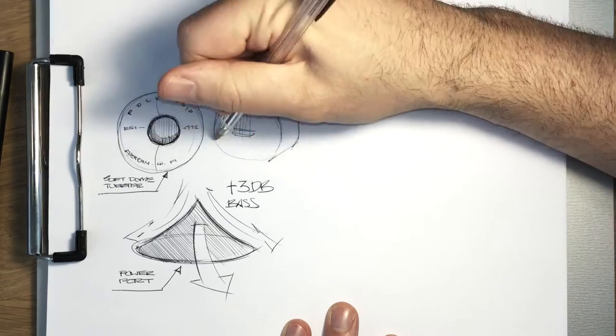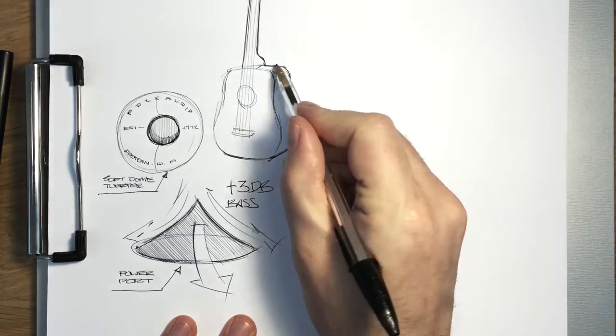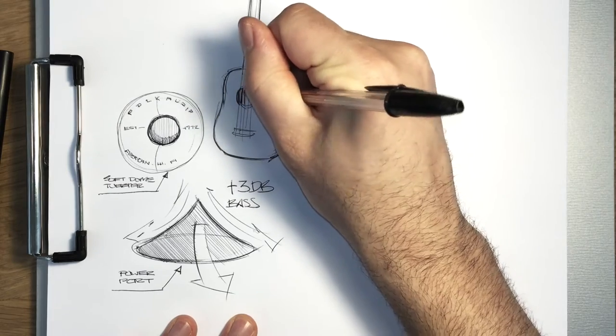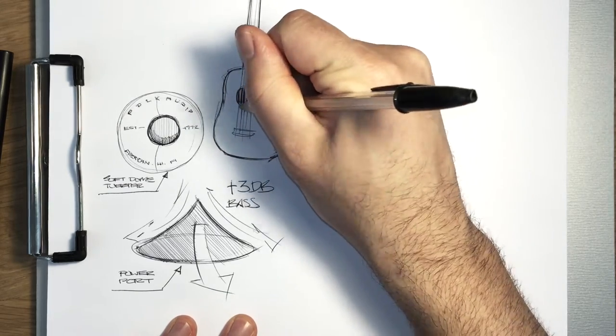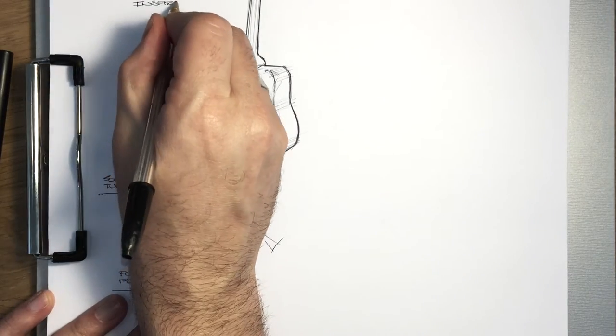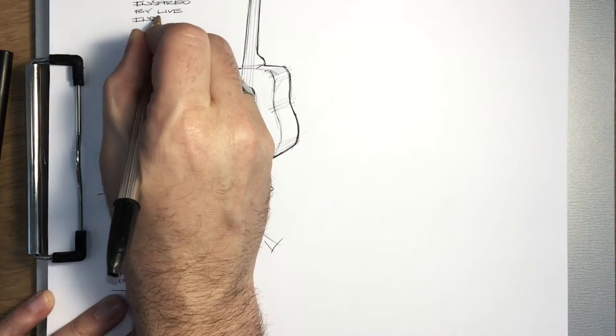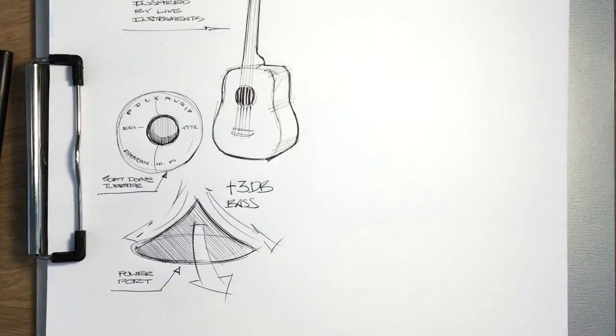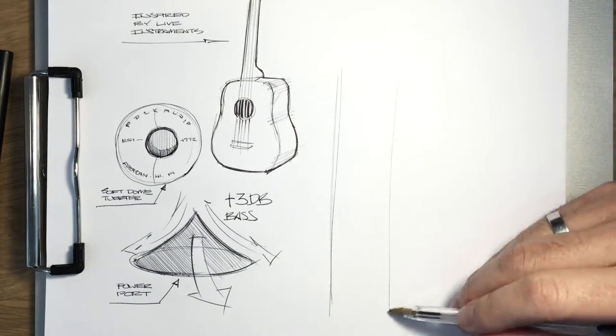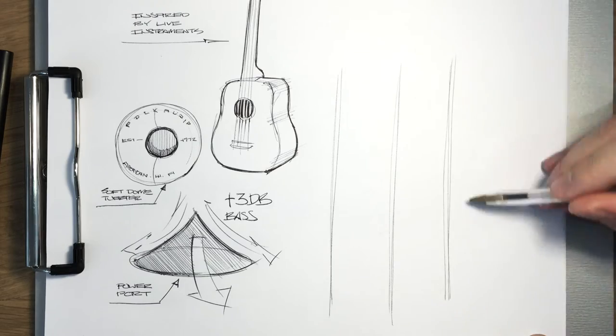And I think this inspiration, looking at instruments more than other speakers, led to a really unique shape for the speaker. Most speakers are simple boxes, and we wanted to have a really iconic shape from the front view of the speaker. So we took those really rounded edges from the acoustic guitar and brought those to the silhouette of the speaker.